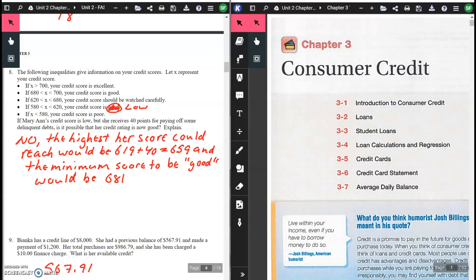Between 580 and 620, your credit score - fix that for me on your side - should be low, not good, low. And anything below 580, your credit score is poor. It says, if Mary Ann's credit score is low, but she receives 40 points for paying off some delinquent debts, is it possible for her credit rating to be now good?